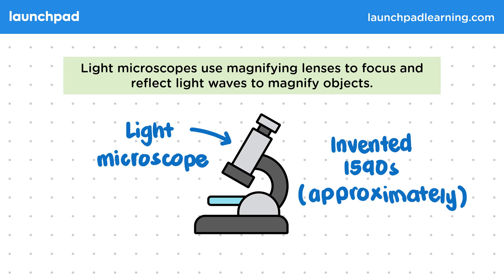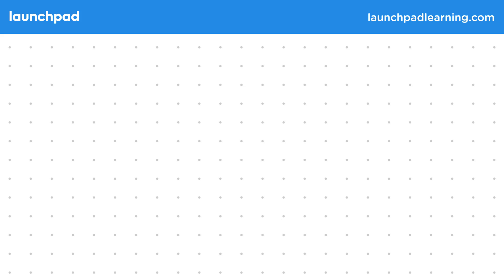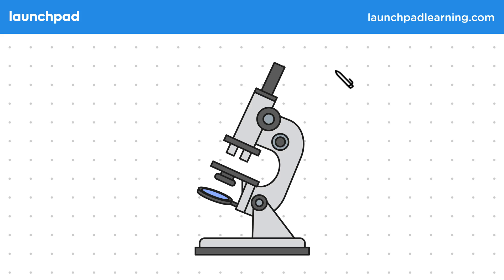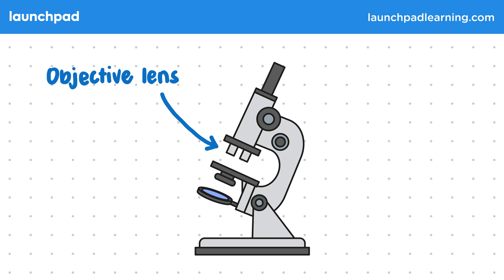What are the different parts of a light microscope? This is a diagram of a typical light microscope. This area just here is the objective lens. Typically there are three of these to choose from — for example, 5x, 10x, and 25x magnification. Normally you would start with the smallest and then work your way up.